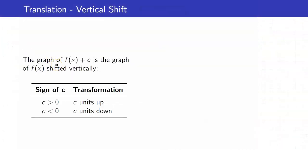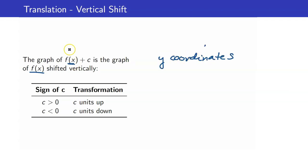Here is a summary of what we just did. When you have the graph of f of x plus c, you can get it from the original f of x by just shifting it vertically. Whenever you have f of x plus c, only the y coordinates get affected. Remember that this is your y — you are adding c to all the y coordinates. If c is positive, you go up, and if c is negative, you go down.